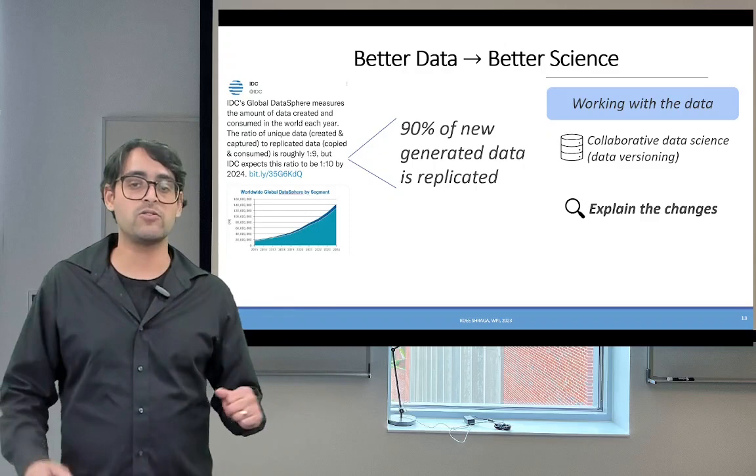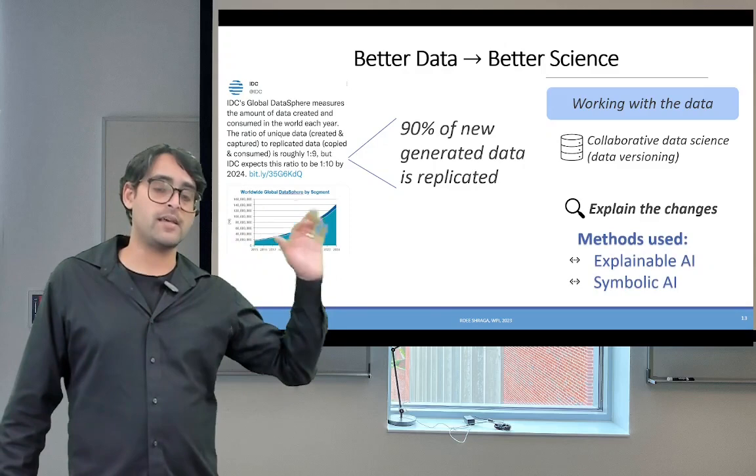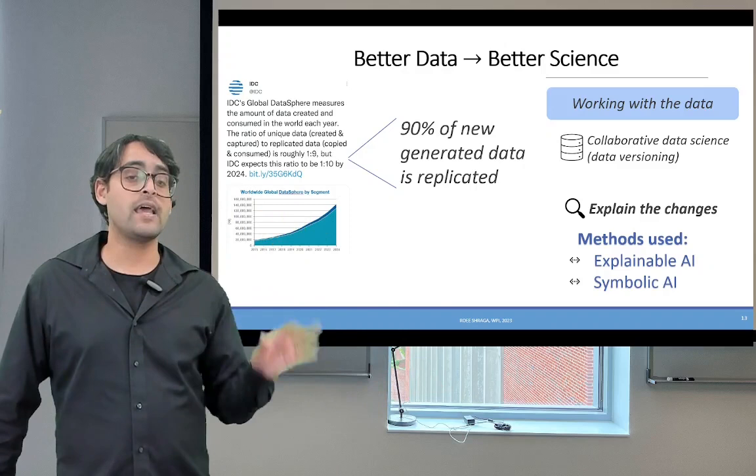The methods that we use in this kind of research mainly rely on explainable AI, so generating AI and machine learning solutions that humans can understand, and also builds on top of symbolic AI.